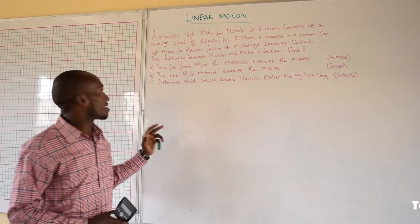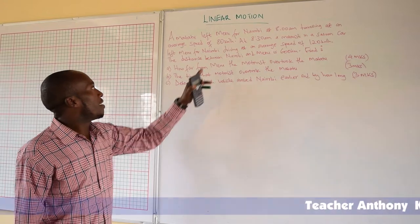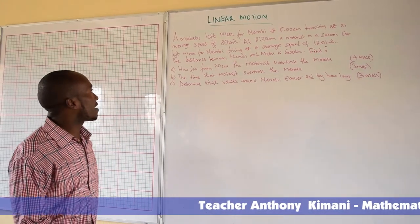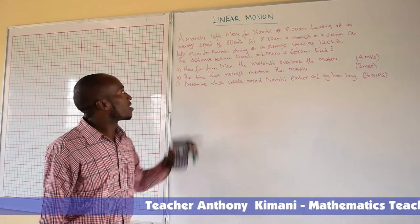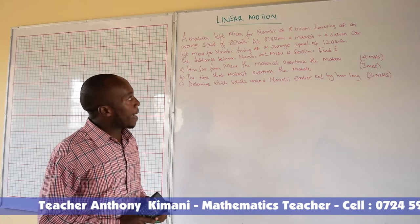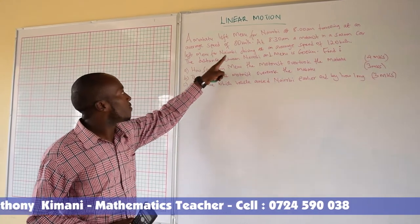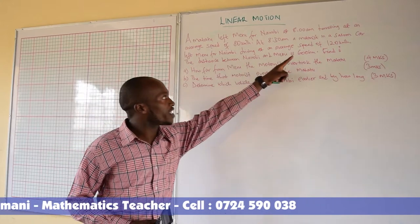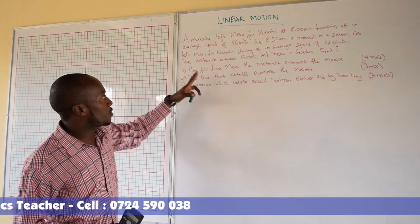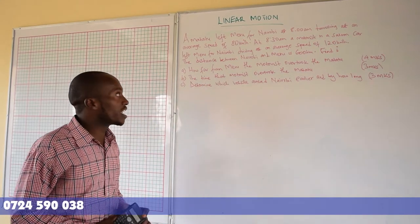The question reads: A Matatu left Meru for Nairobi at 8 am, travelling at an average speed of 80 km per hour. At 8:30 am, a motorist in a saloon car left Meru for Nairobi, driving at an average speed of 120 km per hour. The distance between Nairobi and Meru is 600 km.